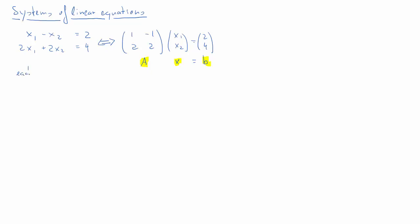What we want to look at is the link between the graphical interpretation of this equation system and the solutions, and how we can use the algebraic properties of A, X, and B to figure out how many solutions there are. First, it's important to understand that in this two-dimensional system, each equation represents a line. This two-dimensional system will have two coordinates, X1 and X2.